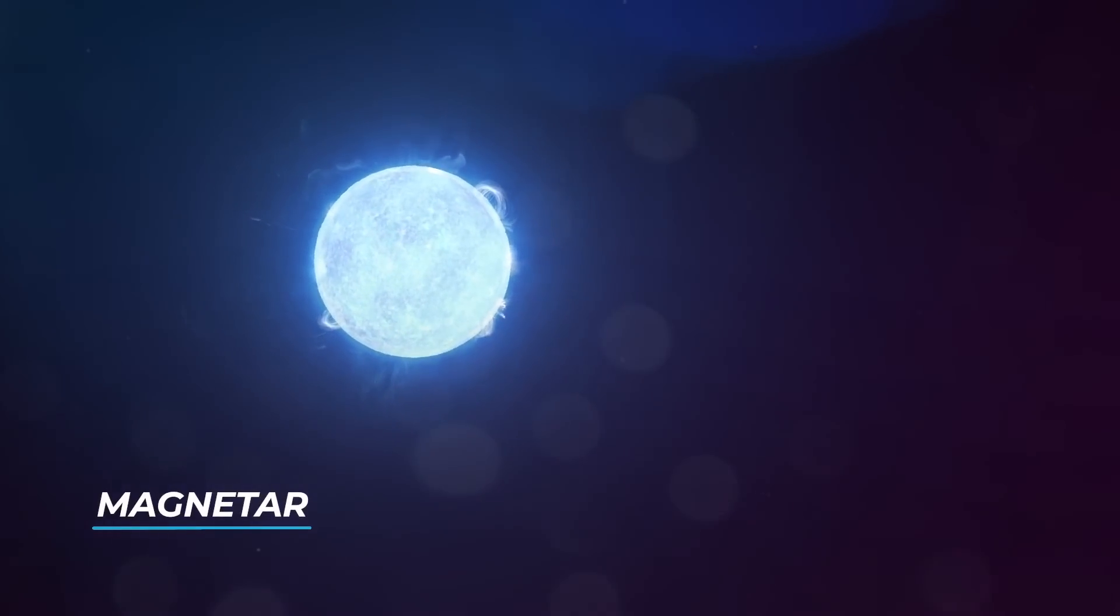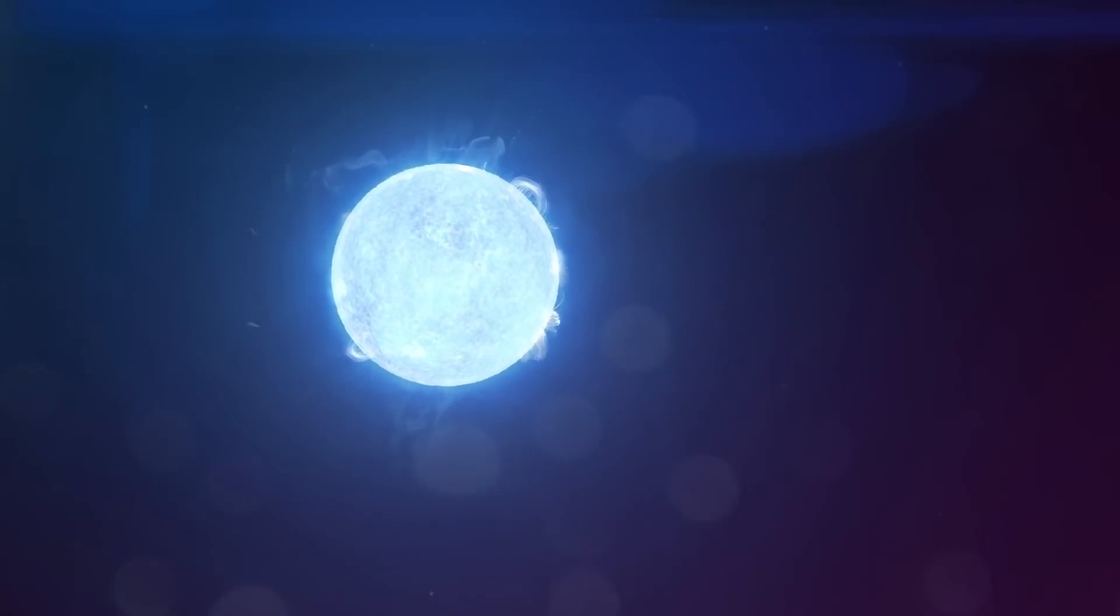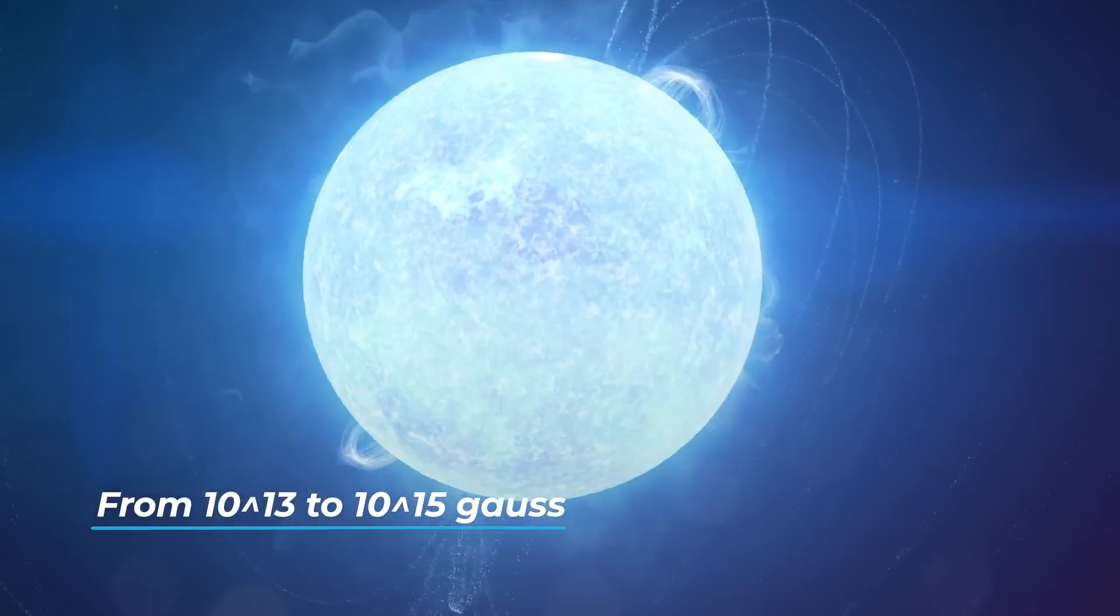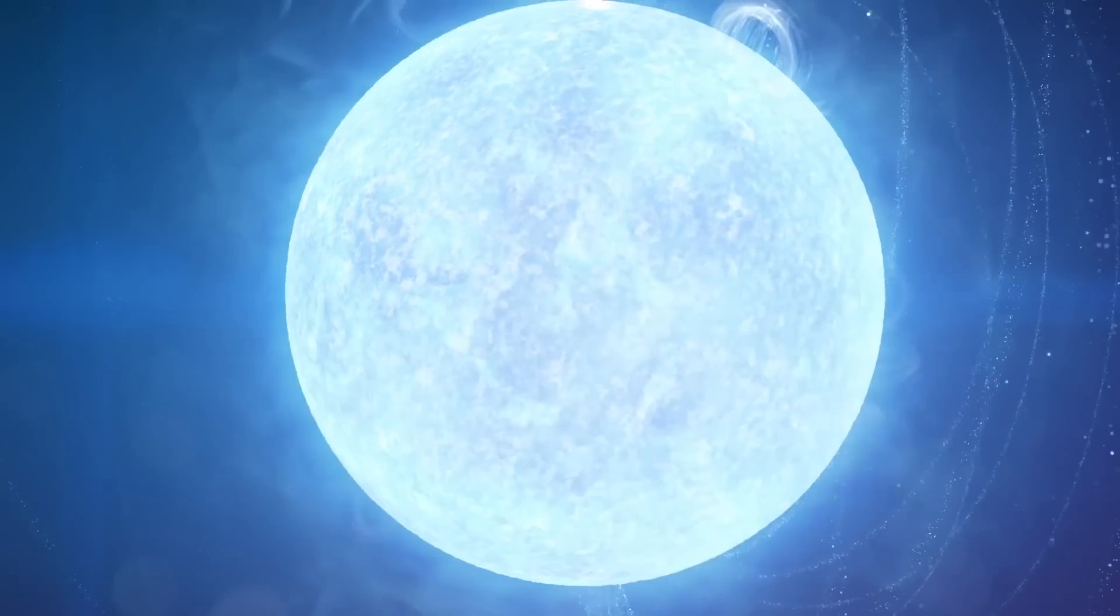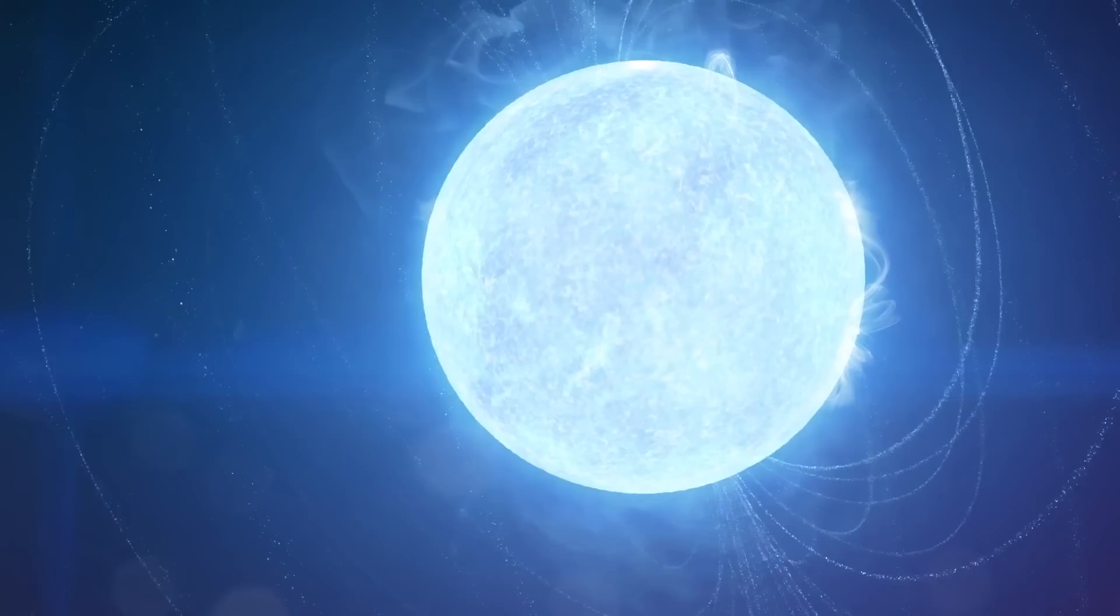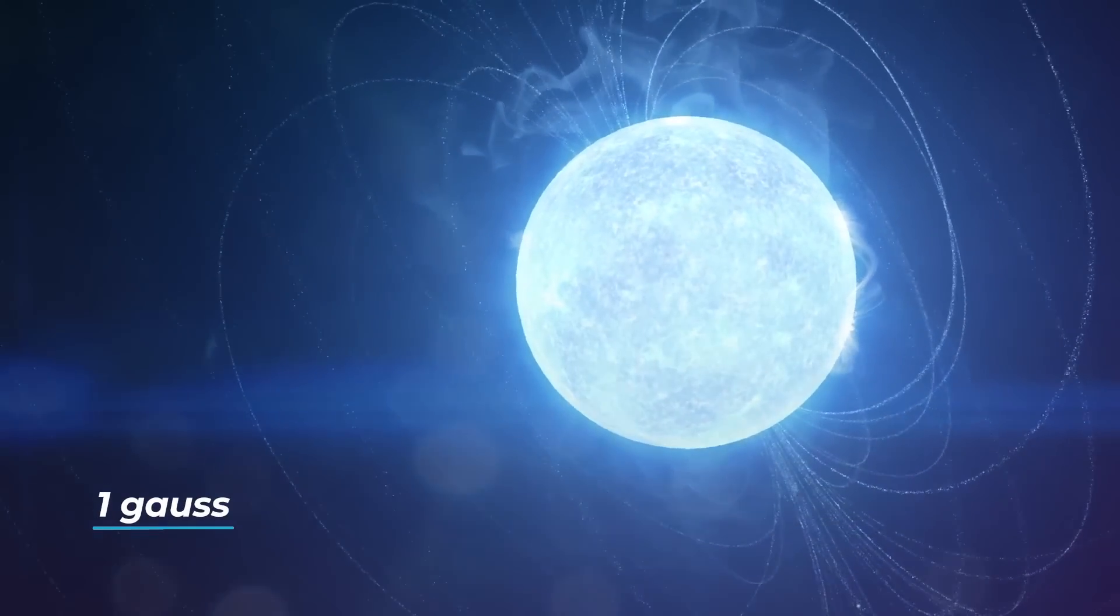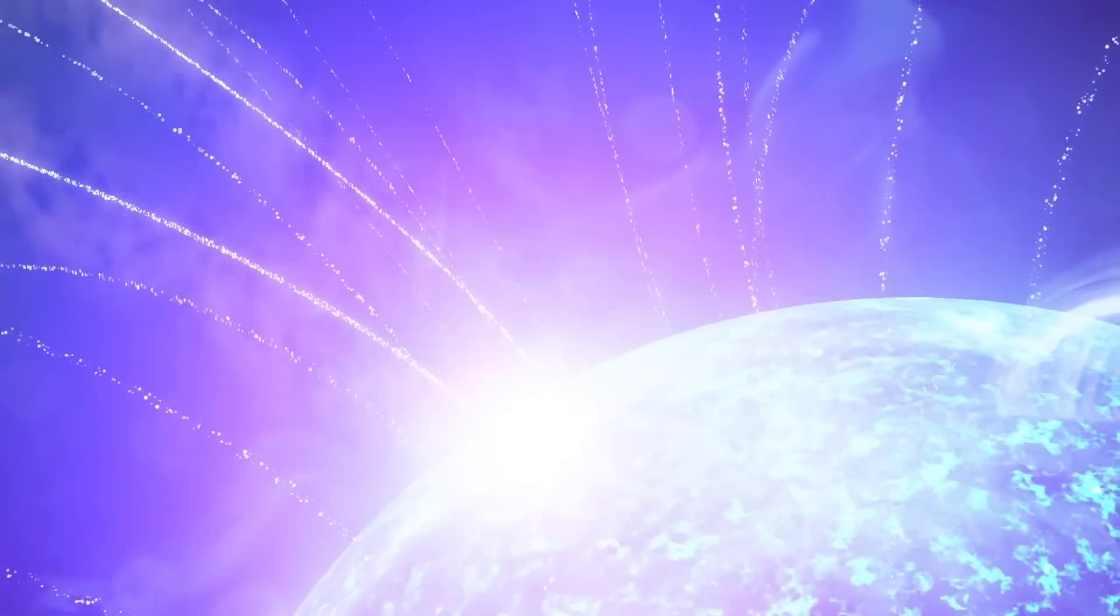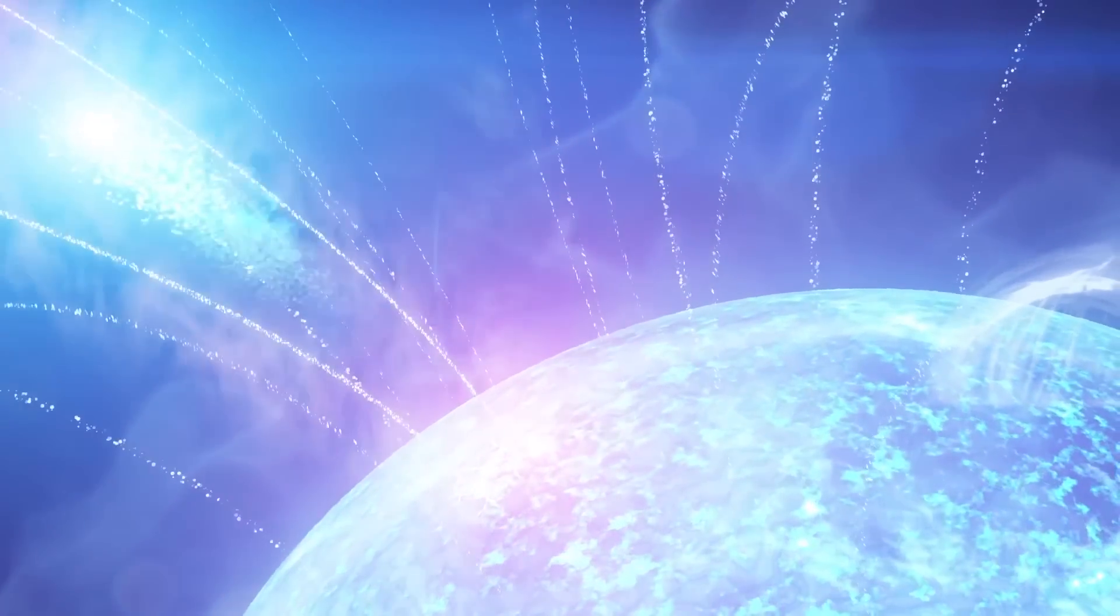Magnetars. They're similar to pulsars, but are characterized by a very strong magnetic field, from 10^13 to 10^15 Gauss, billions of times more intense than the Earth's magnetic field, which is instead about 1 Gauss. Because of these very intense magnetic fields, magnetars also emit soft gamma rays.